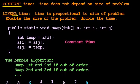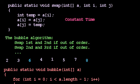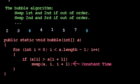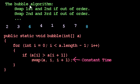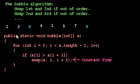In the last video, we looked at an algorithm called bubble, which compared the first and second value, and if they're out of order, it swapped them, then compared the second and third value, and if they were out of order, it swapped them. When we implemented that algorithm, we got this code, and we found that it ran in linear time.